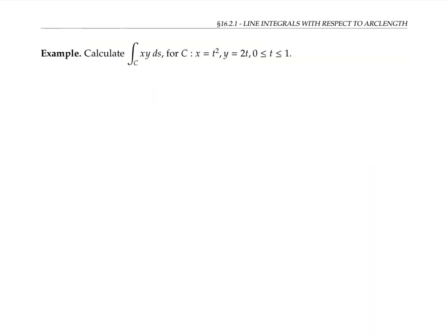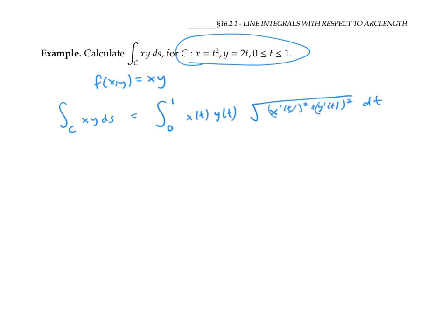Let's do an example and integrate this function. So here f of xy is equal to xy over the curve given by this parameterization. First, we know that this integral is defined as the integral from a to b of our function times the arc length element. From above, we know that x of t is t squared and y of t is 2t, so x prime of t will be 2t and y prime of t will be 2.